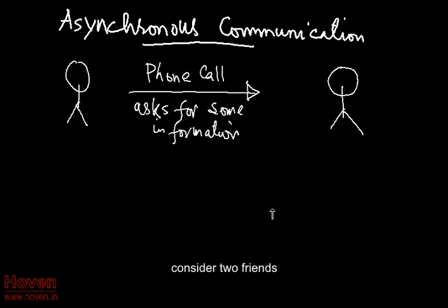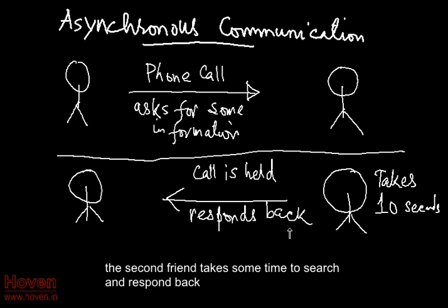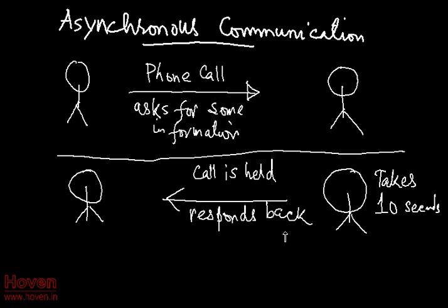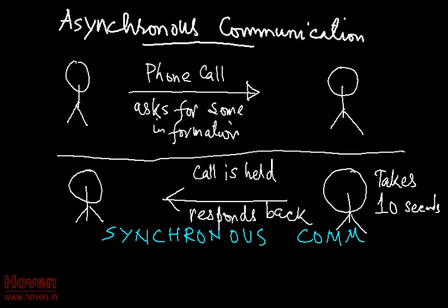Consider two friends. The first one wishes to ask some information from the other and places a phone call. The second friend takes some time to search and respond back. During all this time the call is held and the first friend waits. This is a typical synchronous communication.